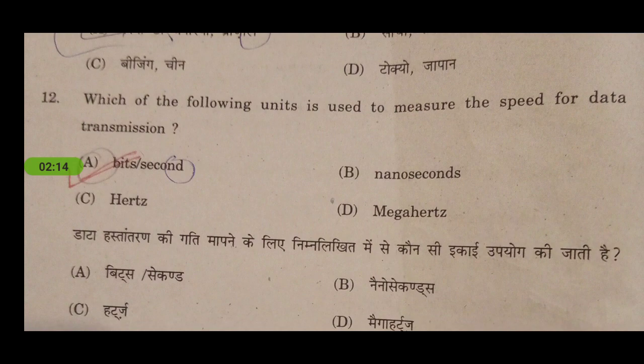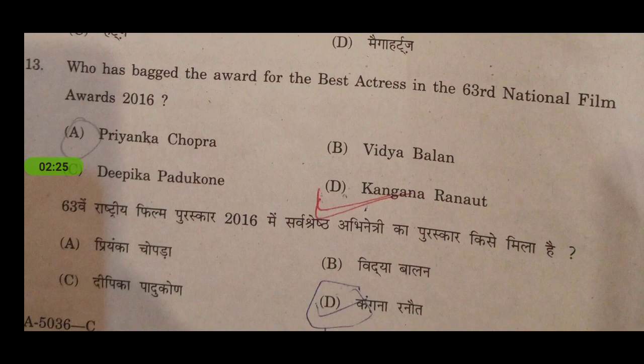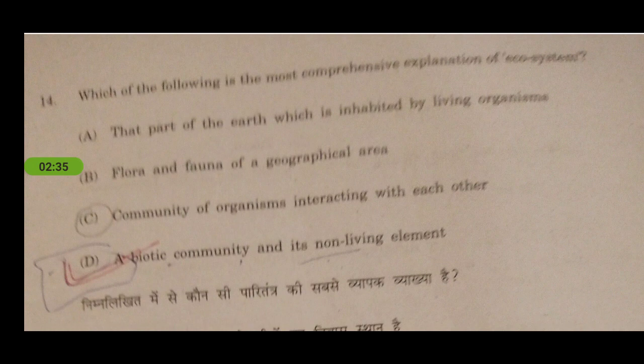Next: which of the following units is used to measure the speed of data transmission? It's bits per second — we know kbps and mbps. Next: who bagged the award for best actress at the 63rd National Film Awards 2016? It was Kangana Ranaut for the movie Tanu Weds Manu. Next: which of the following is the most comprehensive explanation of ecosystem? It's a biology question from the 10th class book.